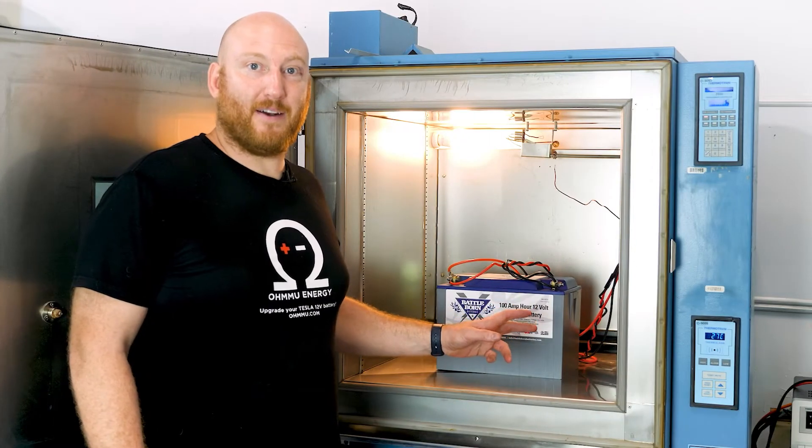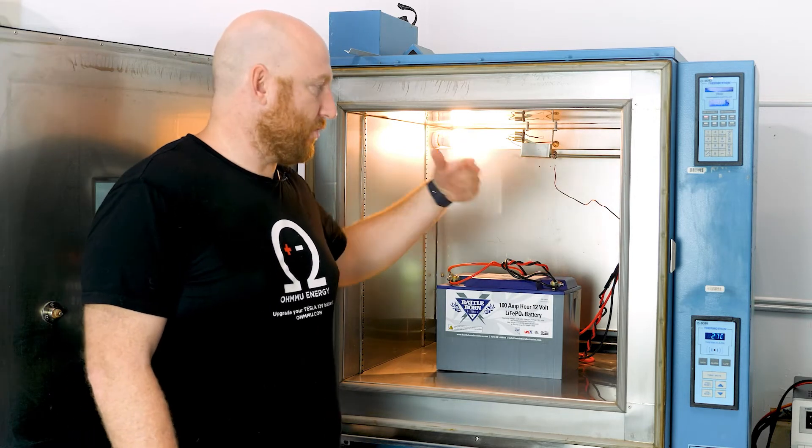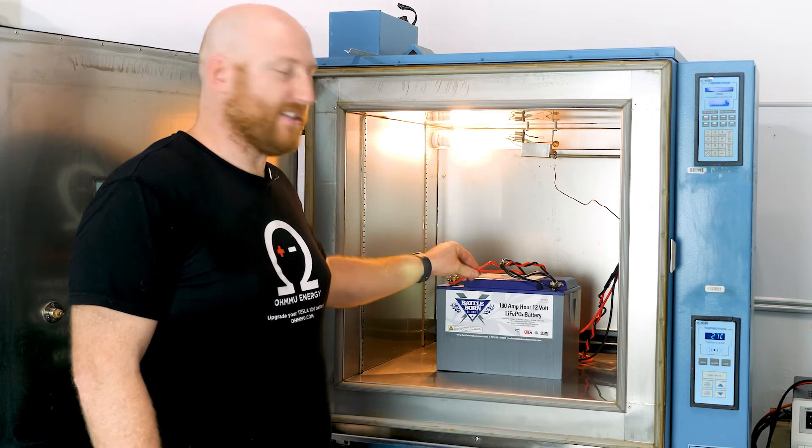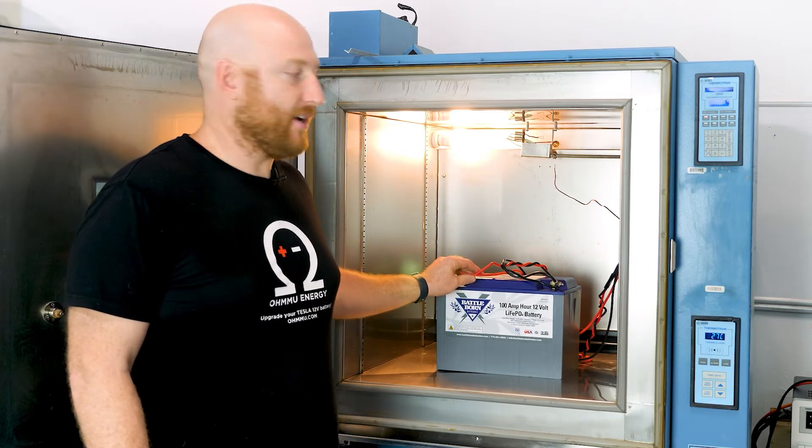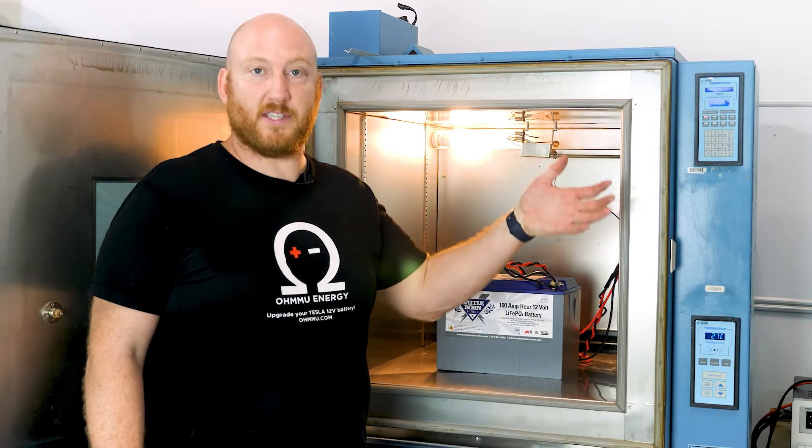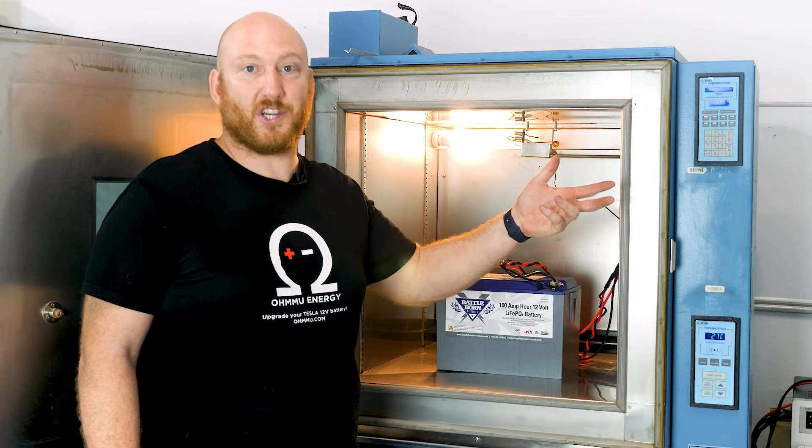We've got the battery all hooked up. We've got two sets of lines that we run from our testing stuff through the Thermotron and into the battery terminals. One set is for charging, one set is for discharging. We'll show you the settings we're going to use in West Mountain Radio and start the test now.